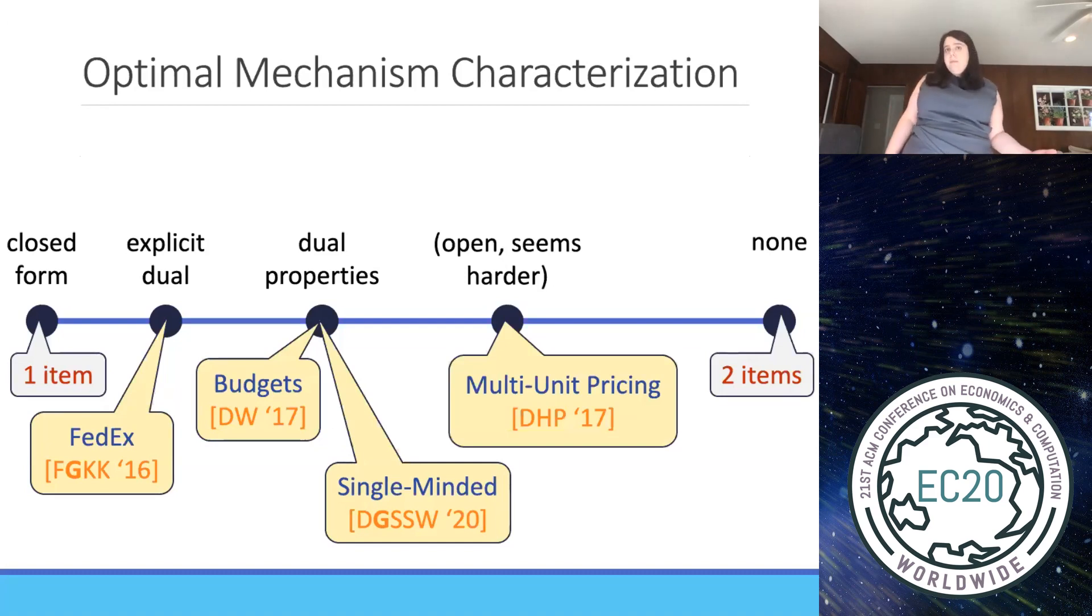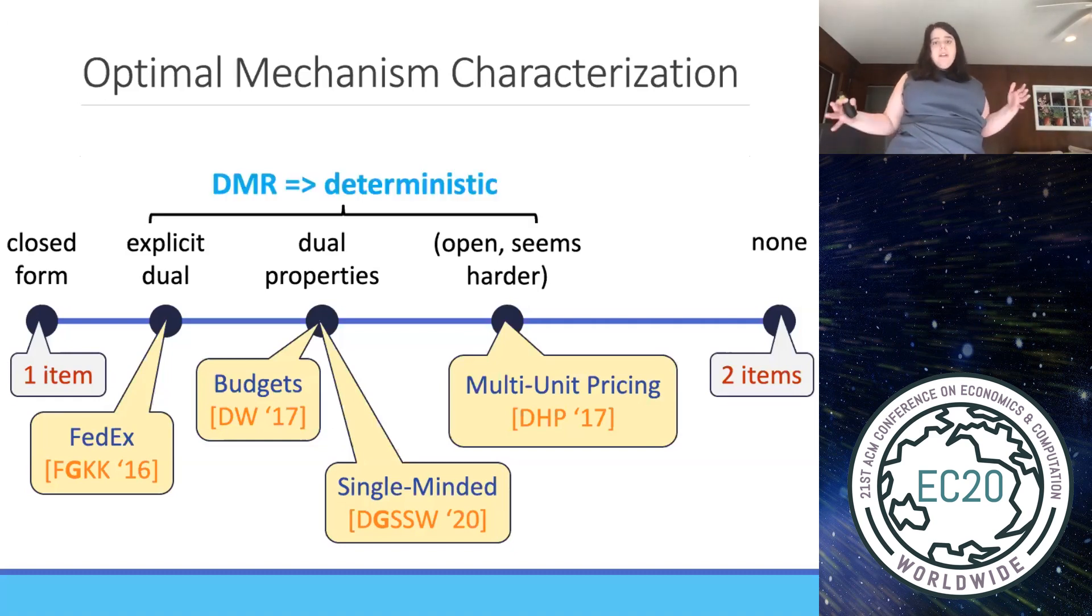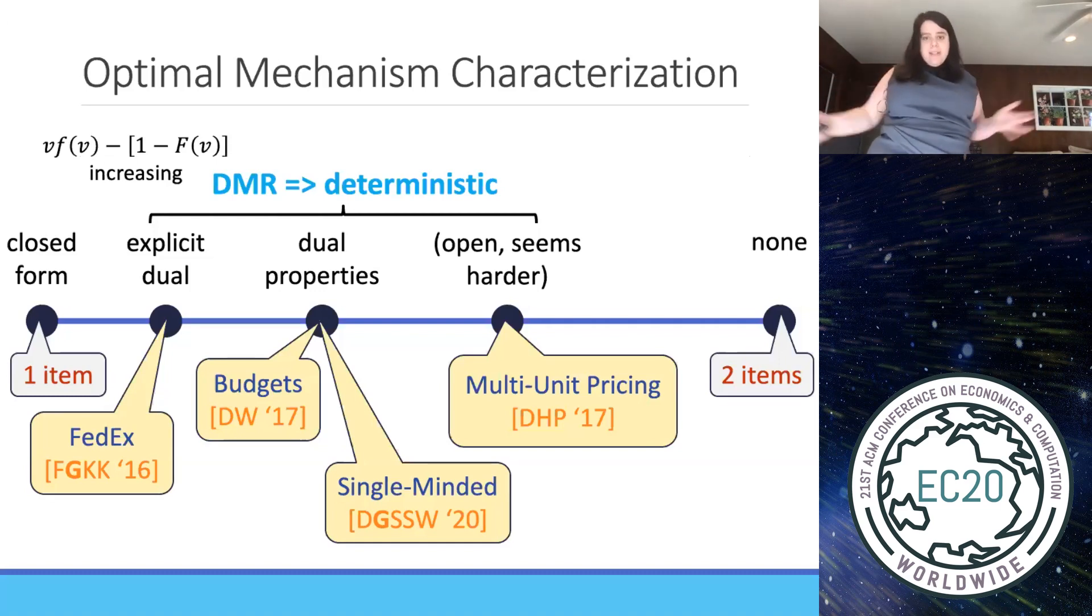So we don't have a closed form for the mechanism, but we do know properties of the mechanism and the dual. So it's not as explicit as in the FedEx setting, but we still know a lot about the mechanism and the dual. When you get to the multi-unit pricing problem, which was studied by Devaner, Hogpana, and Somas in EC17, it's still open. We don't have a characterization for it, although they did shed some light on various properties. However, all of these settings which lie in between have this DMR, declining marginal revenue condition, implies that they're deterministic. So again, this is what DMR means. Under DMR, they all go from exponential to unbounded menu complexity, back down to deterministic, like in the Meyerson case, like in the single item case. So that's a very interesting property of all these problems that lie in between.